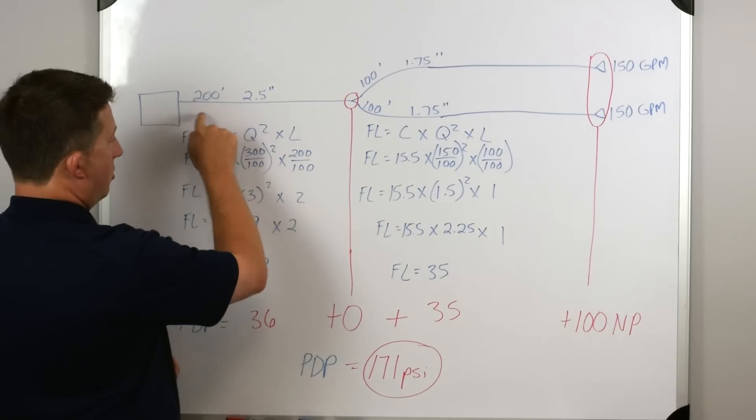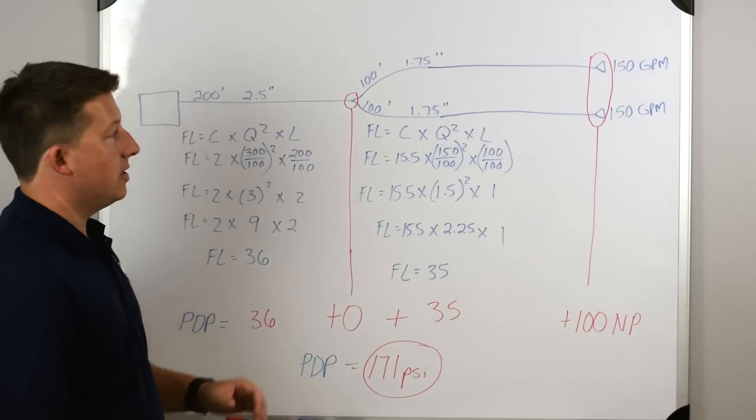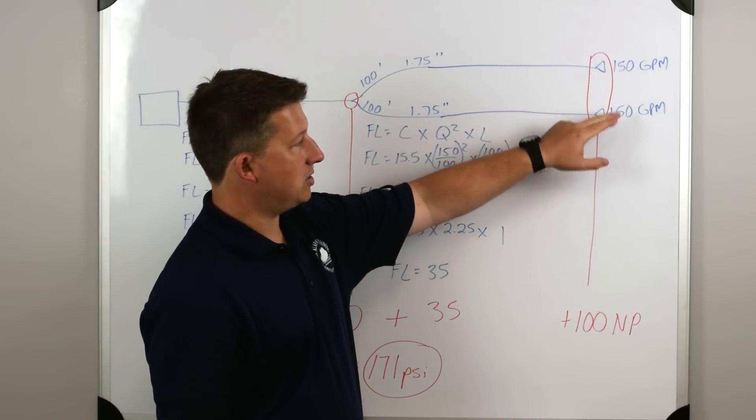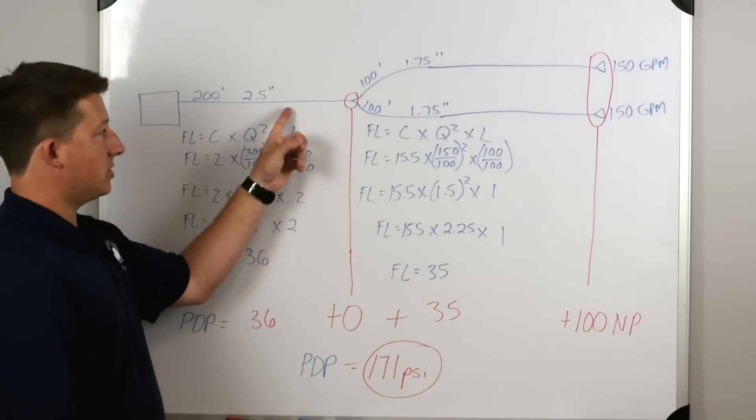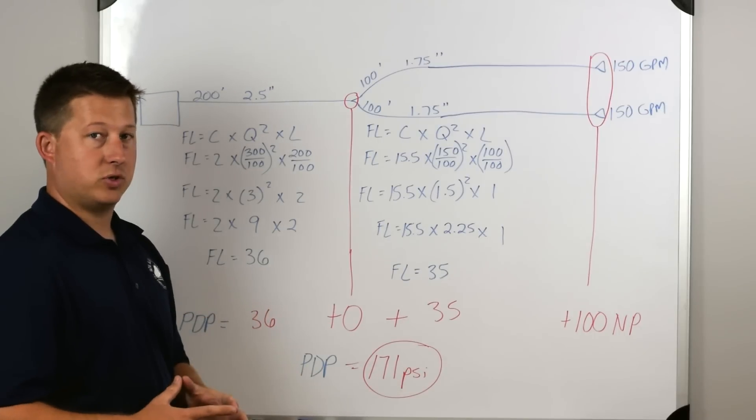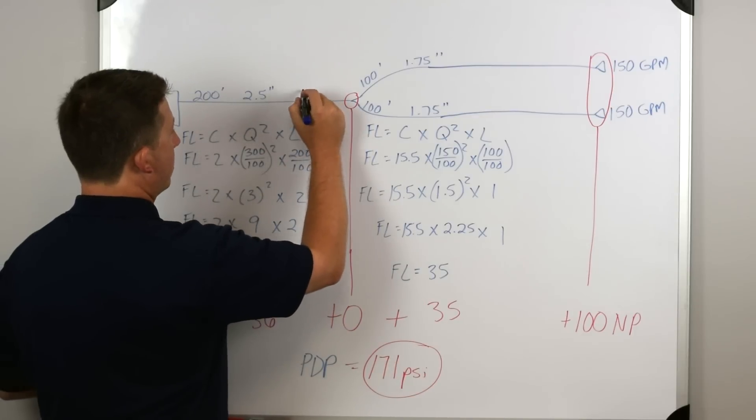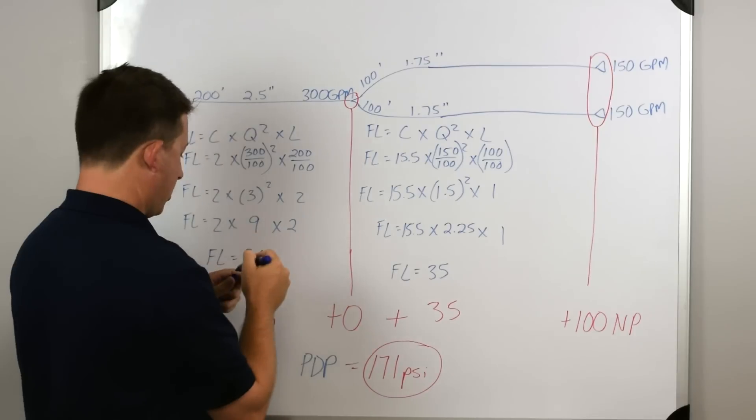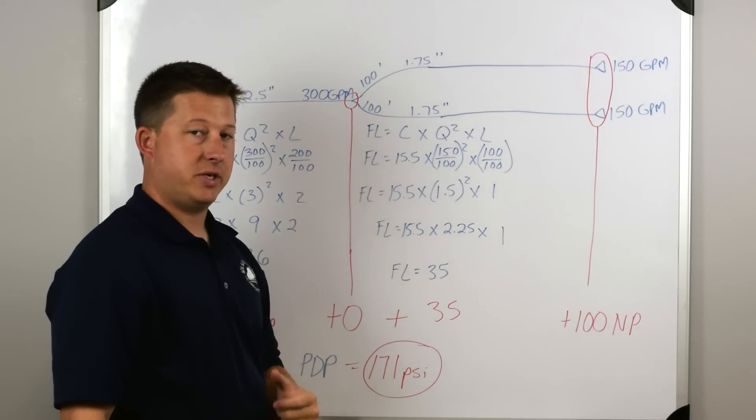We have our length of our hose, 200 feet. We have the size of the hose, a two and a half inch hose, but we don't know how much water is moving through this hose line. This is an easy one. All we have to do is look down here because each of these nozzles are flowing 150 gallons per minute. That lets us know that this line, the two and a half inch line, is flowing the sum of both of those, which is 300 gallons per minute. So we can easily fill this in and put 300 gpm.